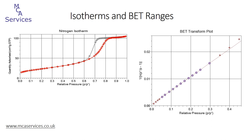Looking carefully at the BET transform plot, we can see that below 0.05 relative pressure the points start to deviate from the regression line as the monolayer is not yet completely formed. Above 0.3 the points also drift from the regression line as multi-layer adsorption and pore filling commence. Using the range we have here, the BET surface area is found to be 84 square meters per gram. We also find that the BET c value is 92 — unitless, but importantly it's positive, which as we saw above is absolutely vital for correctly fitting a BET plot.